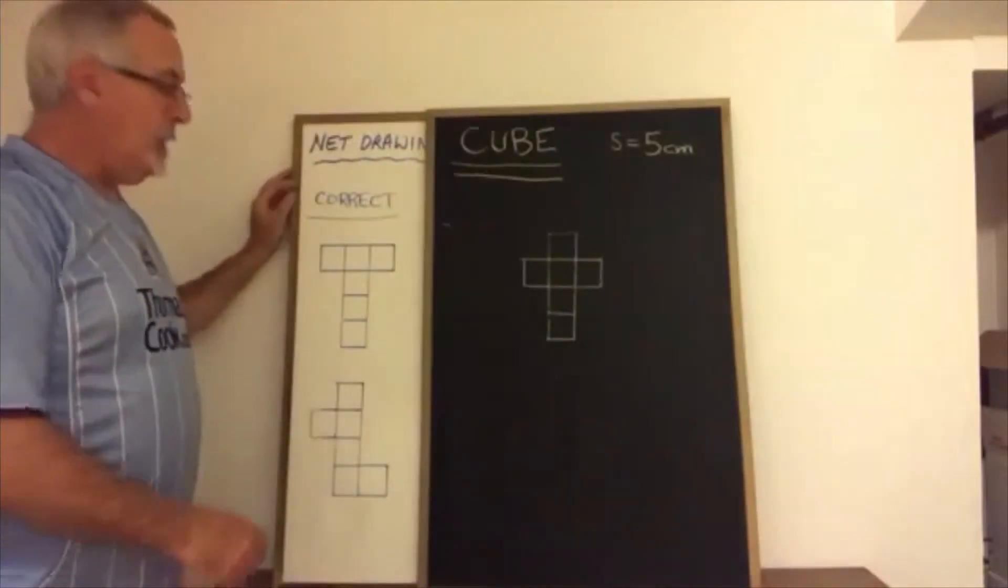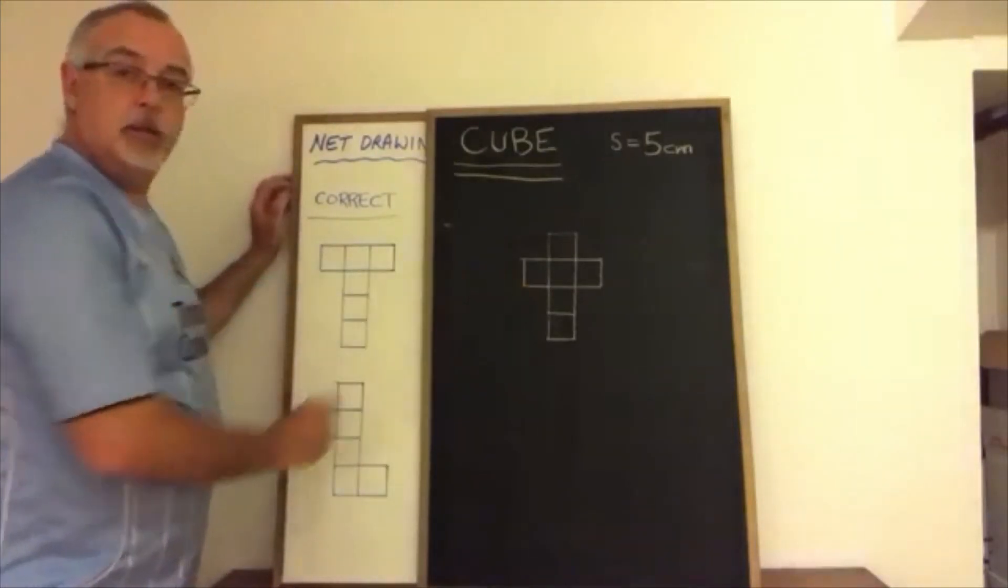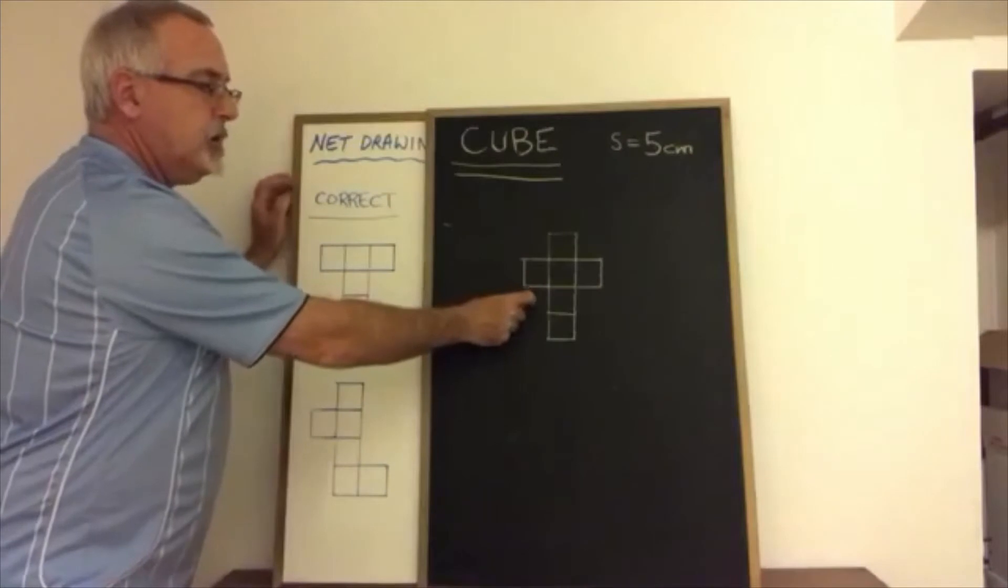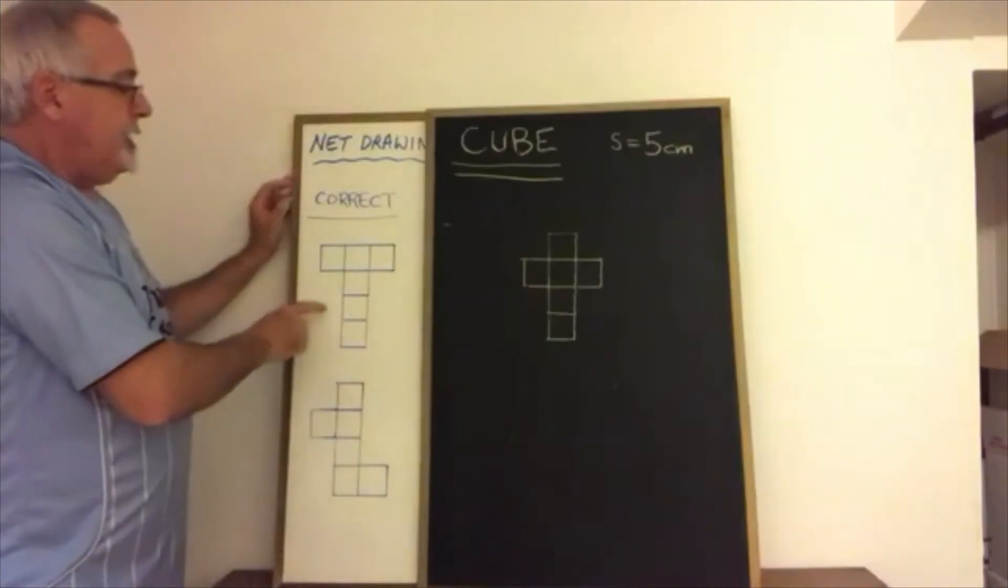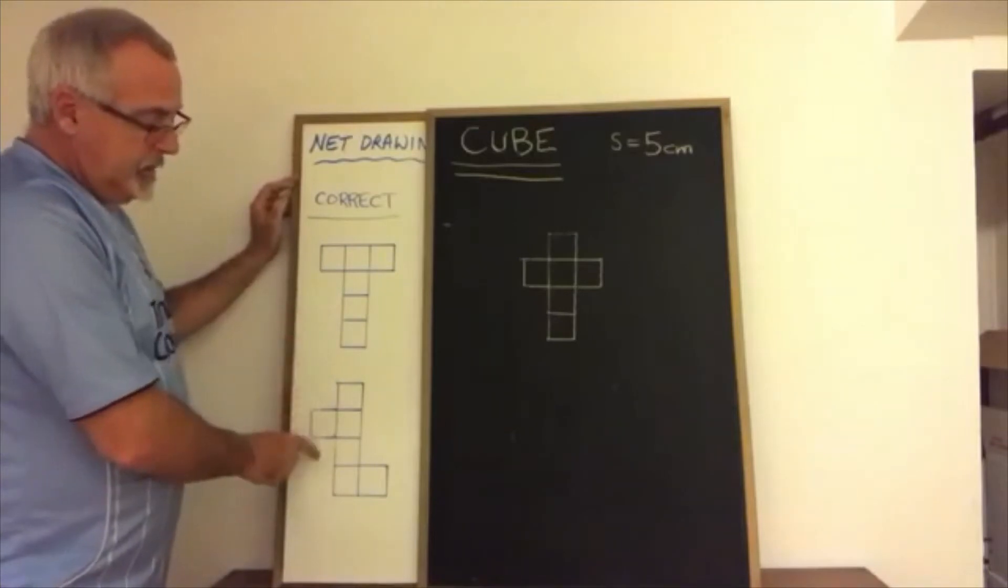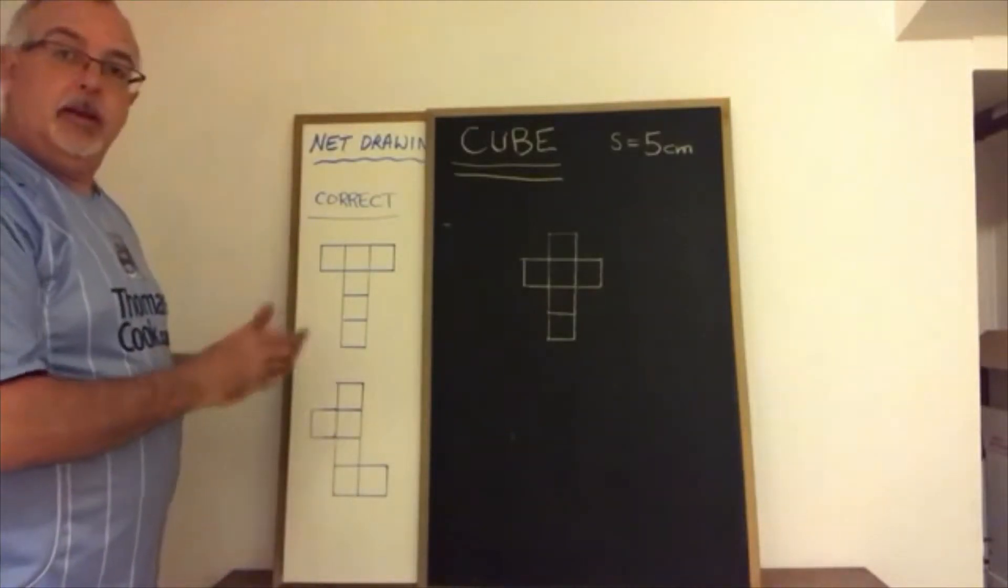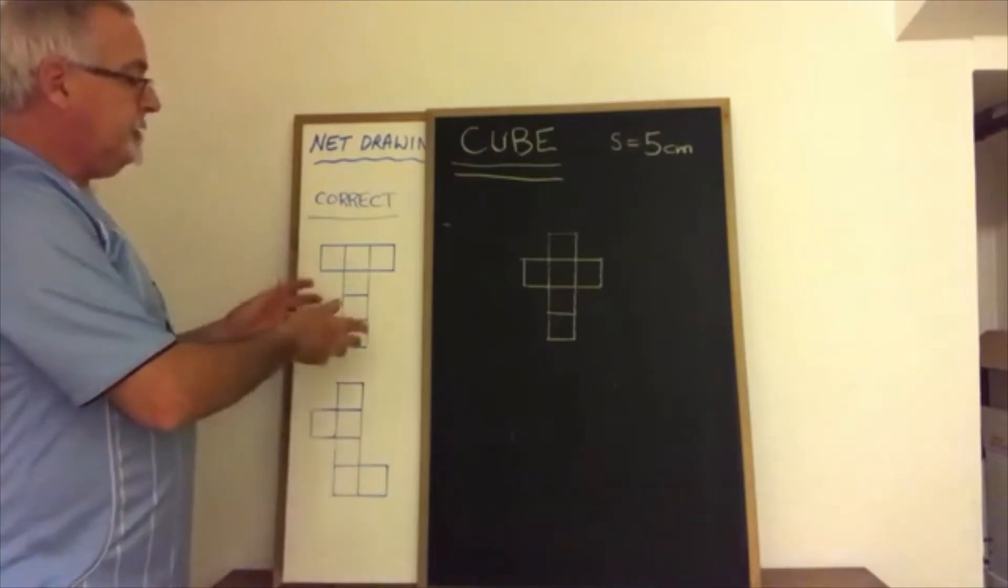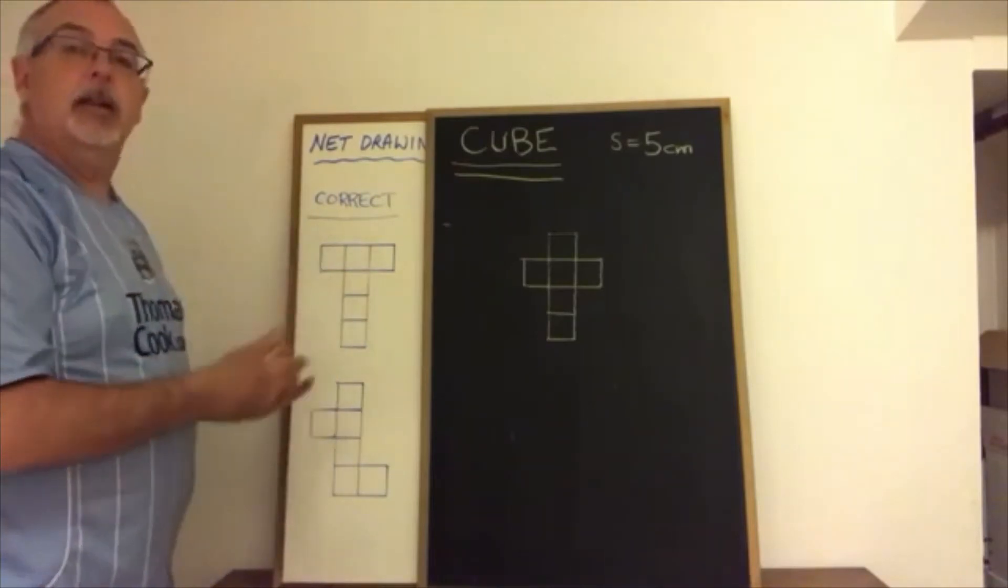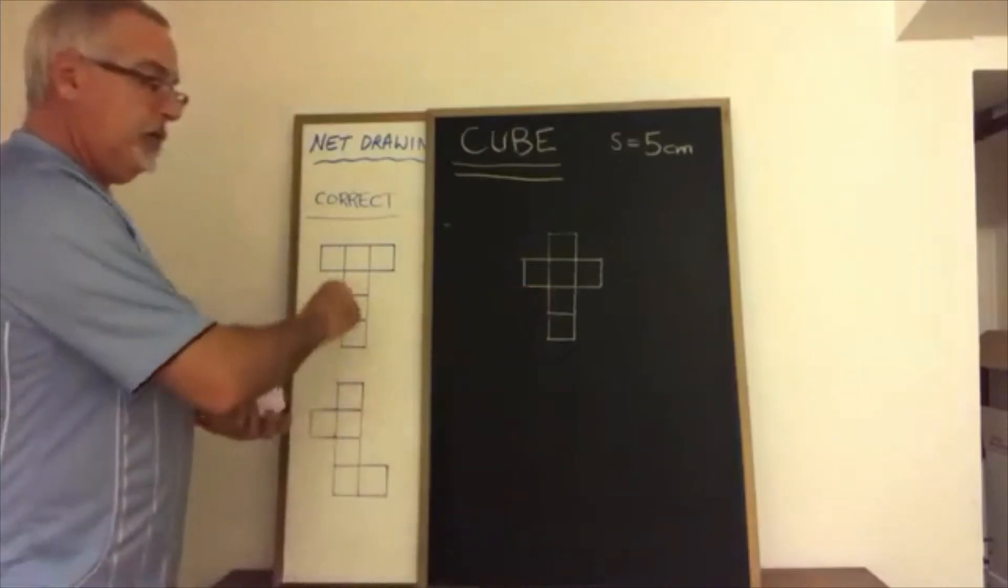So here I have two of the correct nets for the cube that are each different from this one. The original one in chalk looks like a lowercase t the one on top here looks like an uppercase t and then this one I don't know what it looks like but all of these will be correct it's possible to fold all of these together so that they will form the cube. I already proved it with the original now I'm going to prove it with these two.